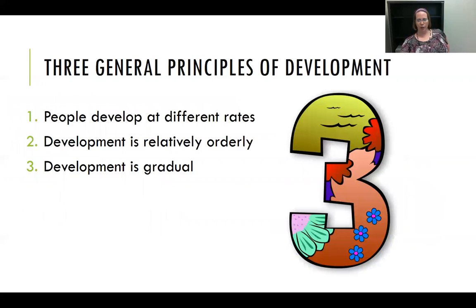There are three general principles of development which theorists, students, and educators believe are true. First, people develop at different rates — Tommy might learn to walk at 14 months while his sister Meg may not do so until 16 months; both are normal, just different. Second, there is a progression to development — it is relatively orderly. We learn to crawl before we walk, and to babble before we talk.